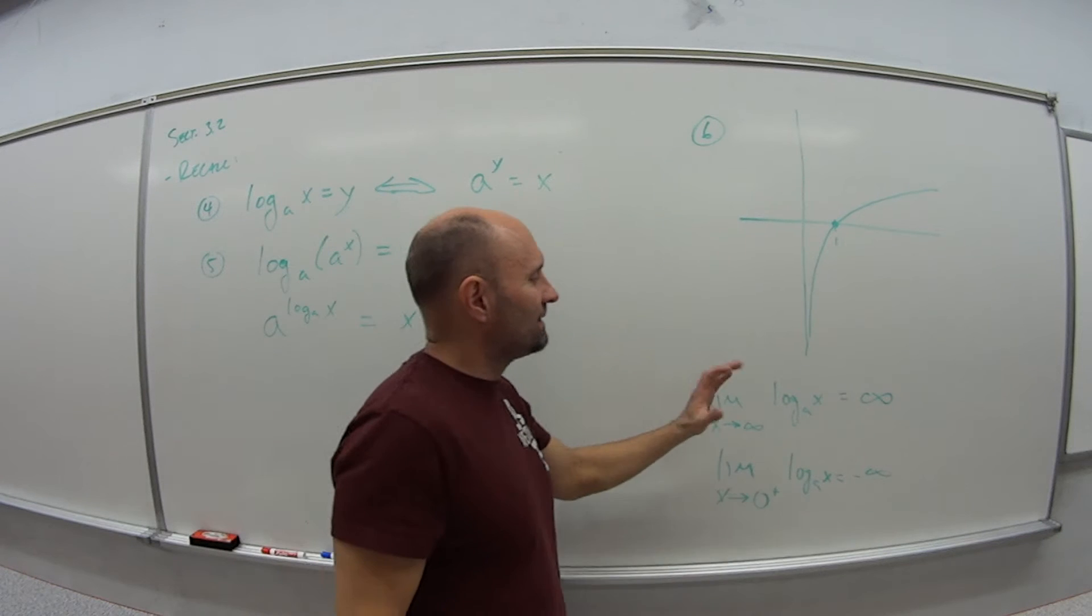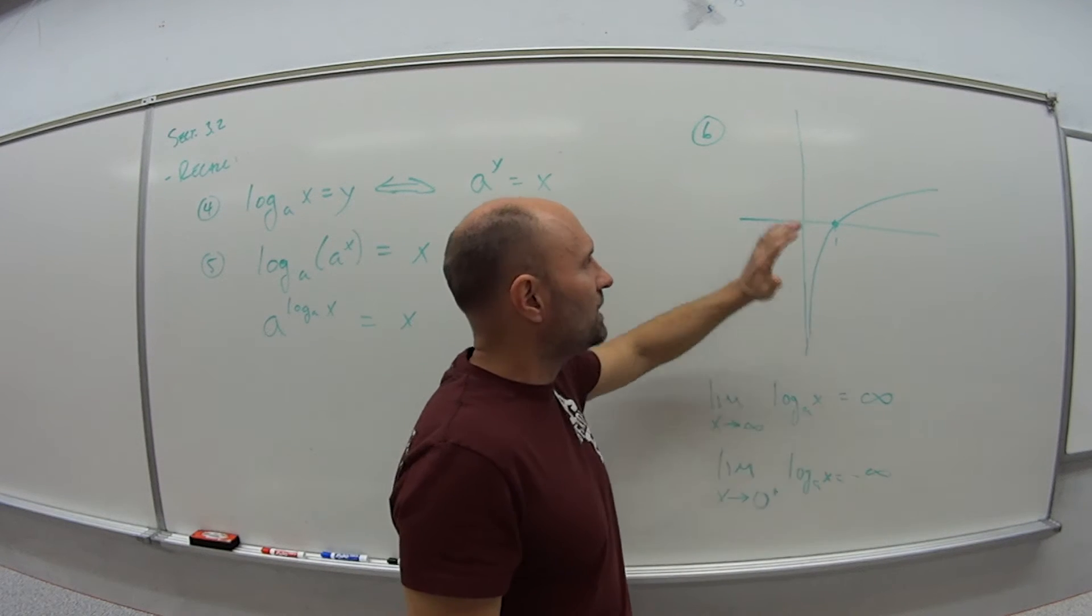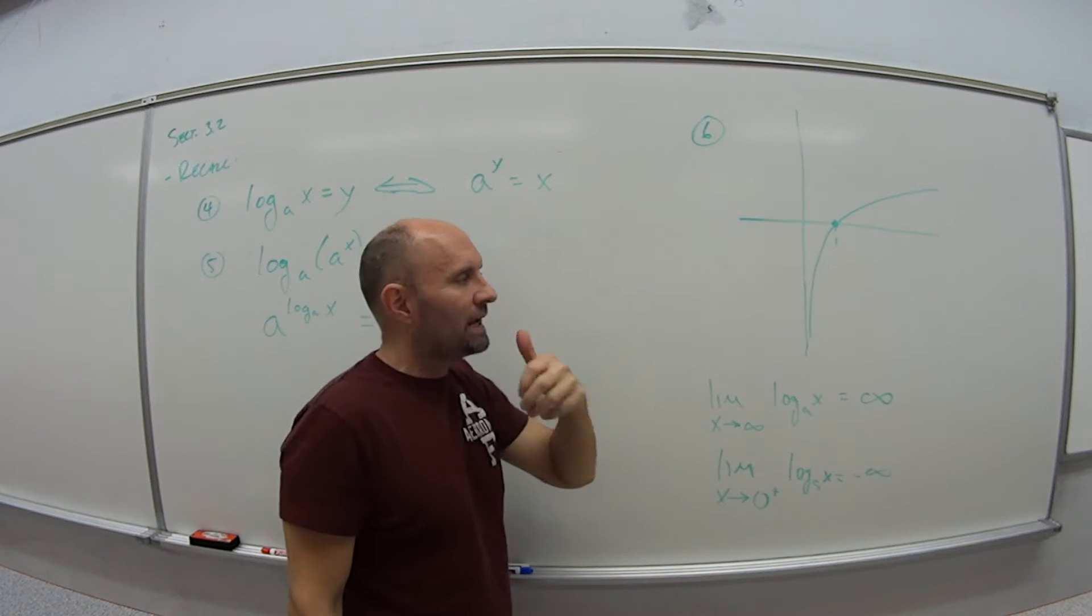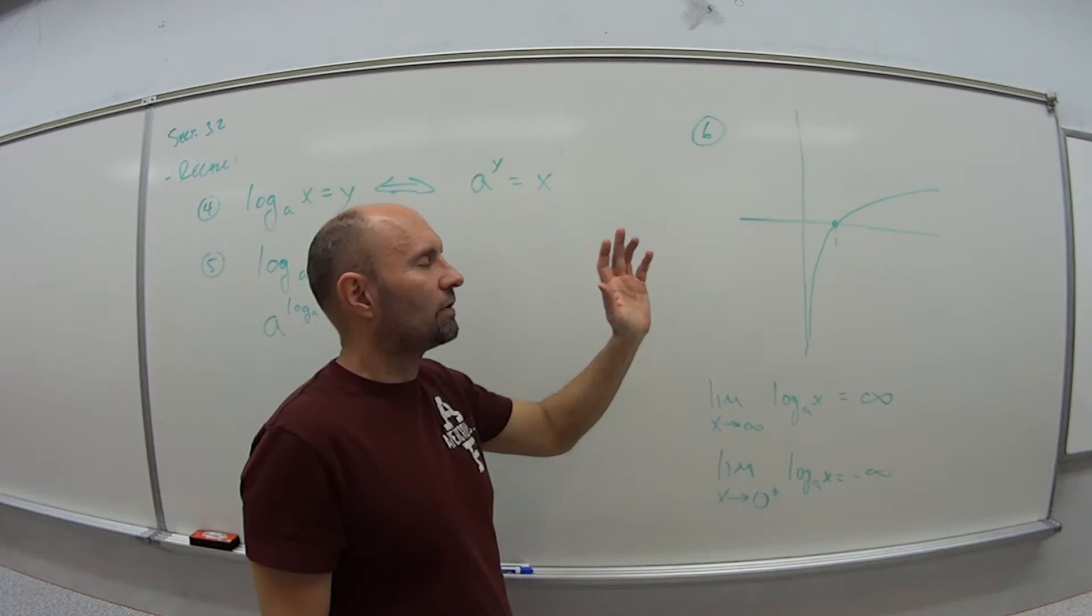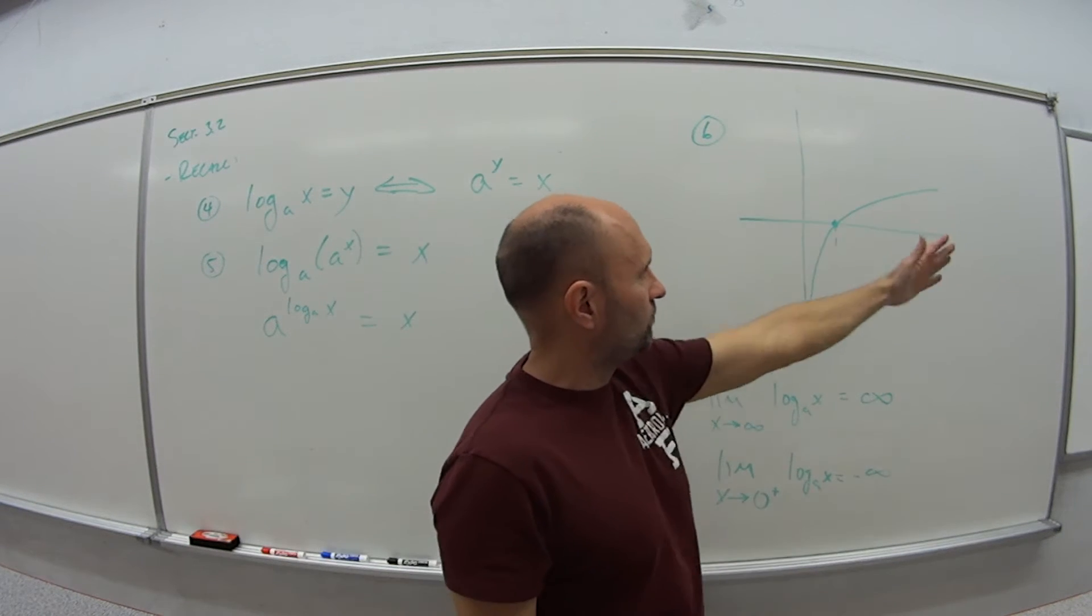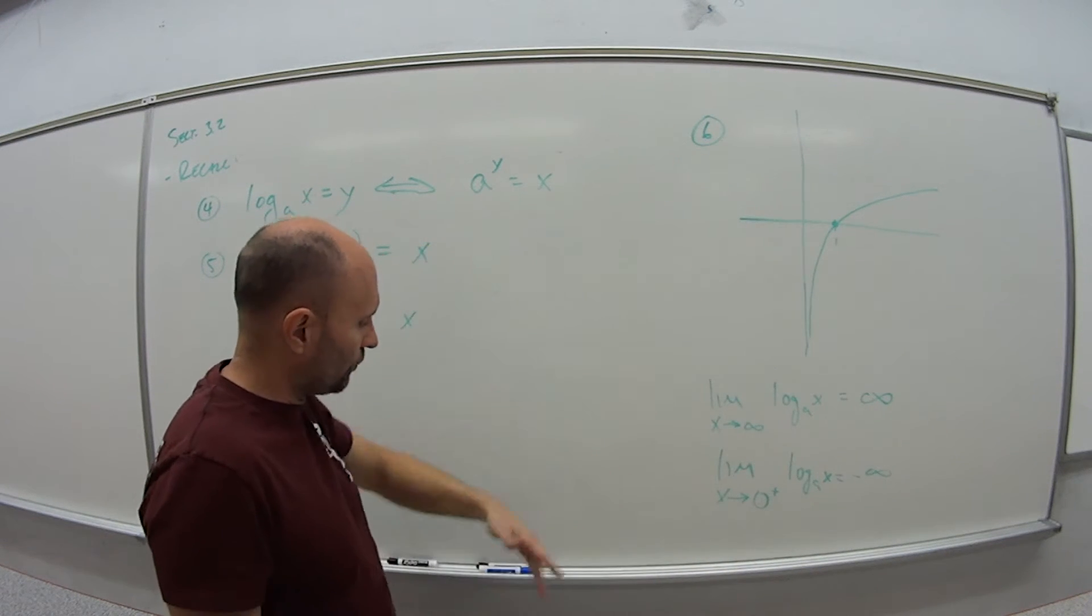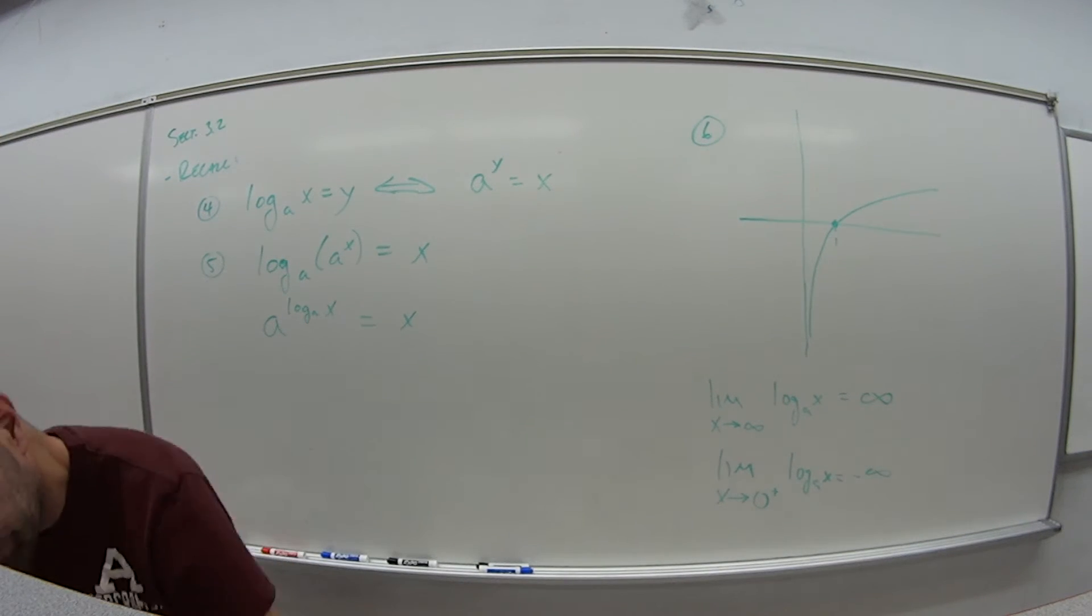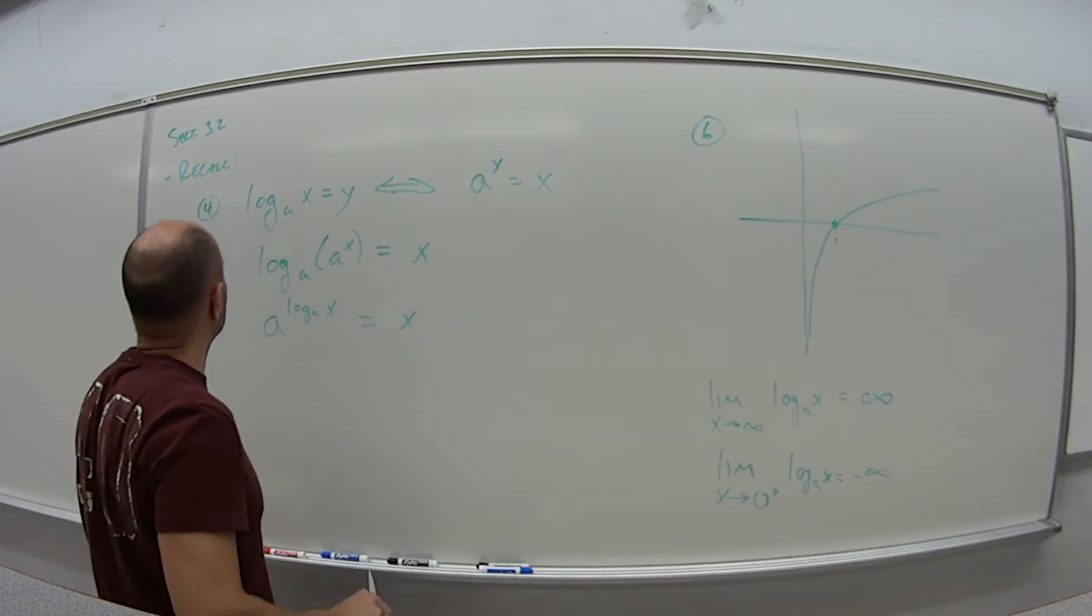But the key thing is not necessarily remembering both of these, just remember what the graph looks like. So when we're trying to figure out domain and range, we're able to figure it out based off of, oh yeah, I remember this is what the graph looks like. So it's only positive numbers, goes from negative infinity to positive infinity. That's number six.